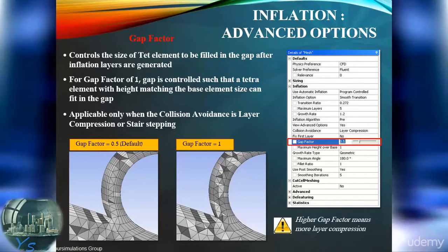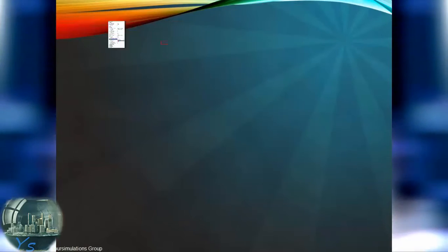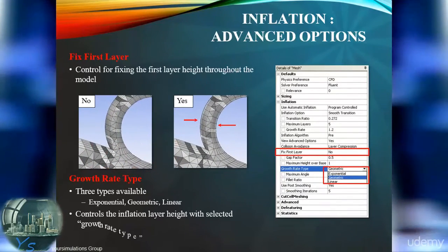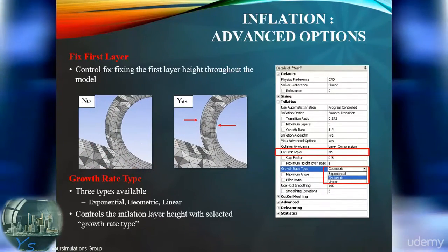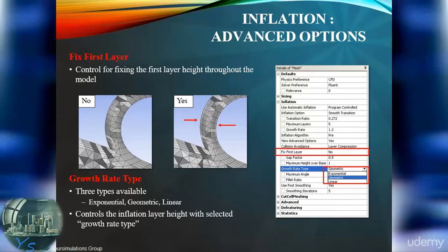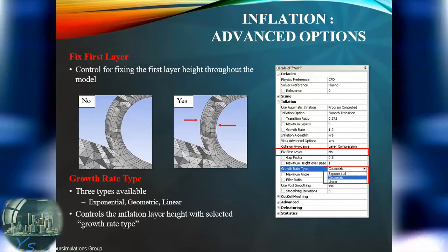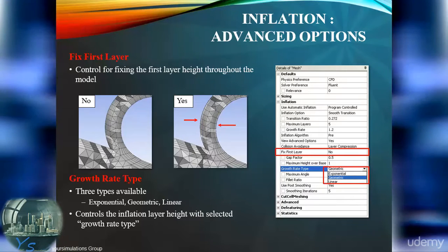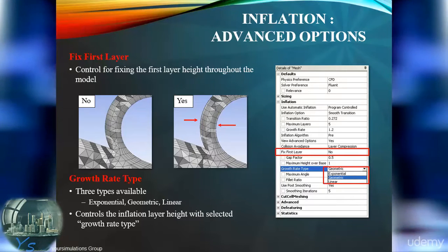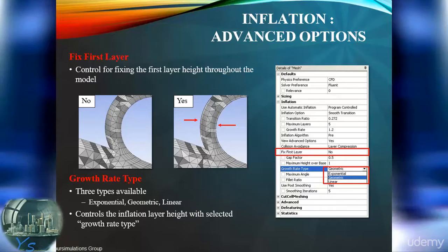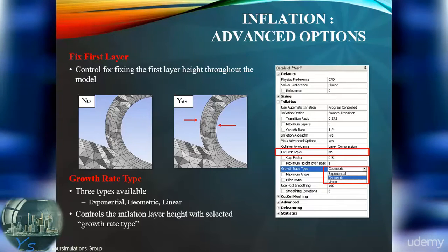When layer compression is triggered, all layers are compressed by default. If the first layer should not be reduced further, its height can be fixed using the Fix First Layer option. This can be important for cases with a discrete phase model, where the particles have to be smaller than the smallest cell.